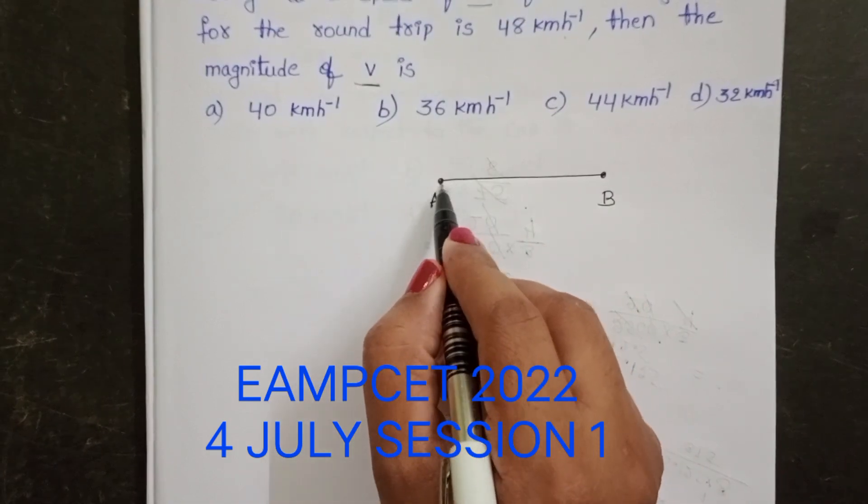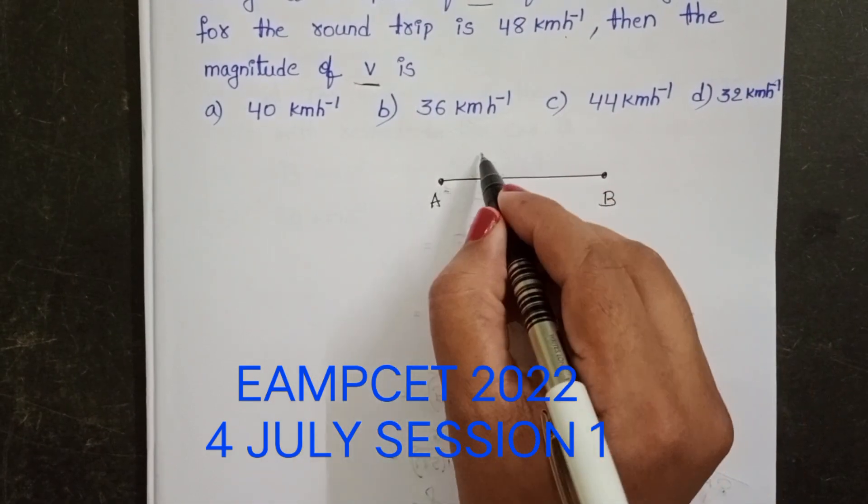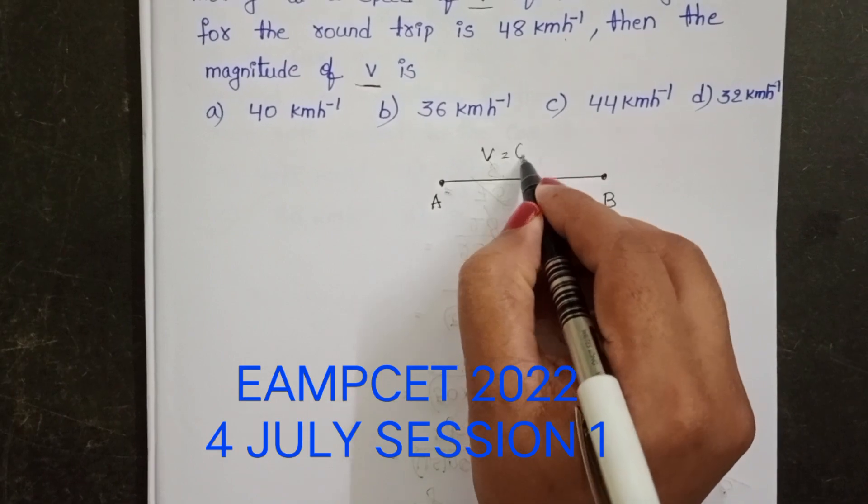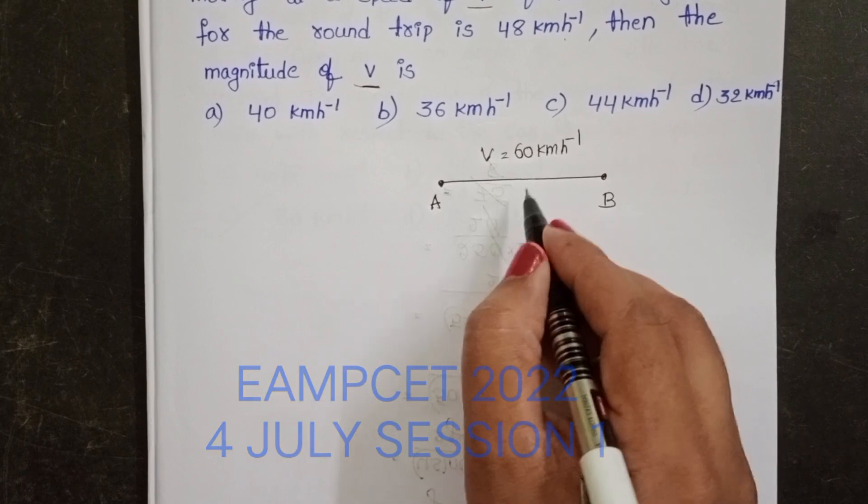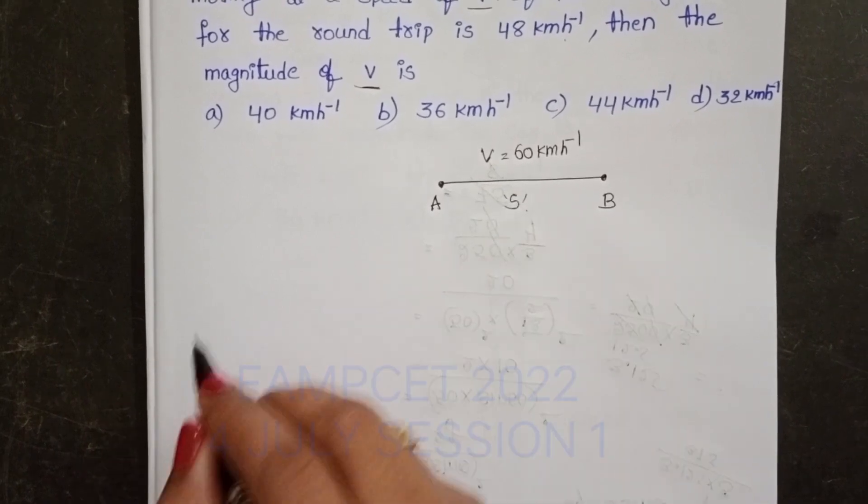Initially the car is moving from A to B with a speed of 60 km per hour. The distance between A to B, let it be S.